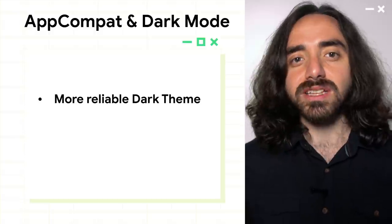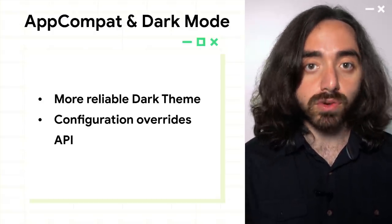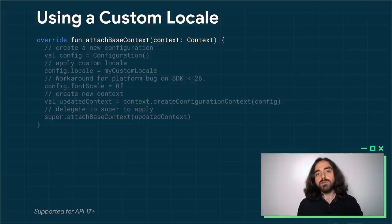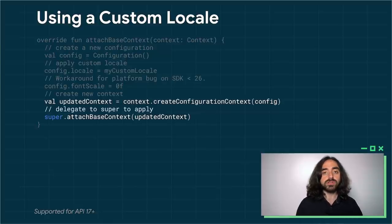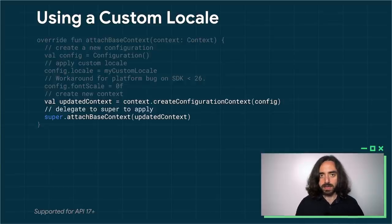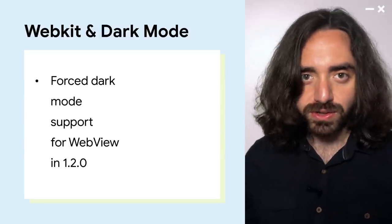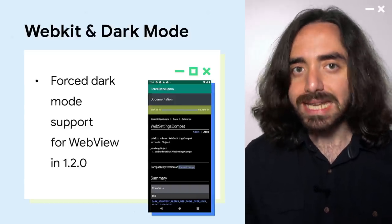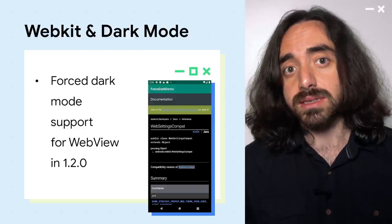We have also made substantial improvements to AppCompat's implementation of Dark Mode. To make sure you can still customize your theme, we have added a configuration override API. For instance, if you want to specify a custom locale for your activity, you can override the attachBaseContext method and create a new configuration. You should then create a new context as a combination of the existing context plus the custom configuration, and delegate to the super method so the new context is used across the activity. Additionally, Jetpack's WebKit library has a new API in the 1.2.0 release to force Dark Mode for its contents. When enabled, the WebView will render sites in Dark Mode where supported, or forcibly invert certain colors if the website doesn't support Dark Mode.